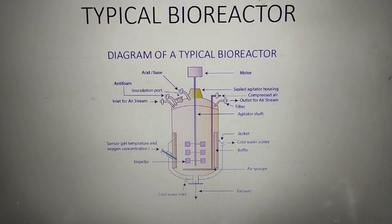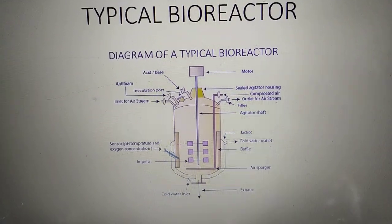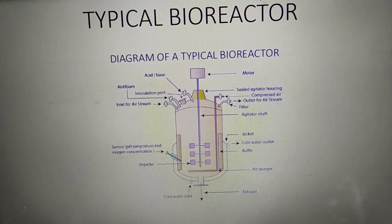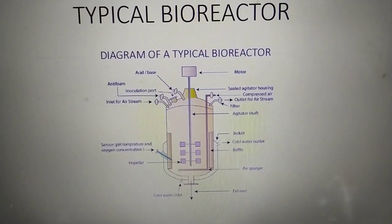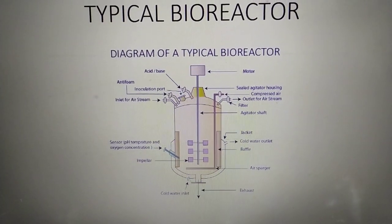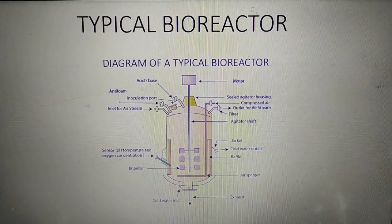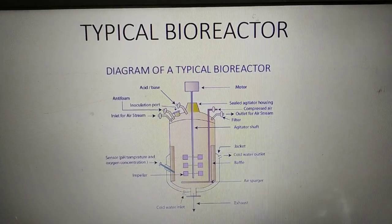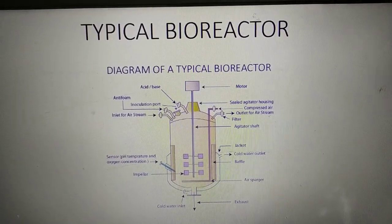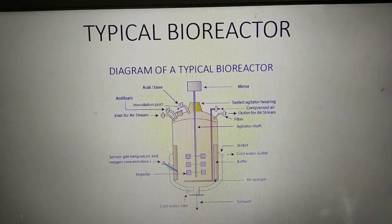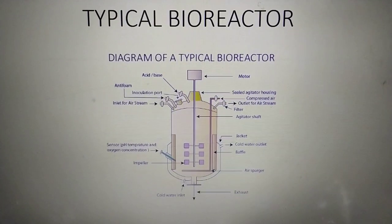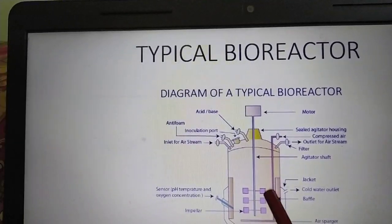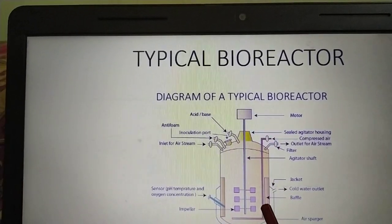Regarding bioreactor dimensions, the height-to-width ratio is 2:3 — the width is 2 and the height is 3. That is how a bioreactor is constructed in a fermentation industry. For an animal cell bioreactor, the ratio is 1:1. Observe the picture: this dimension is 2, this is 2, and this is 3 — that ratio.